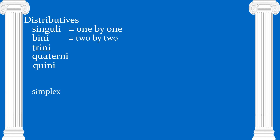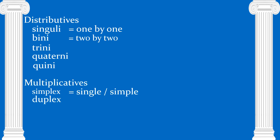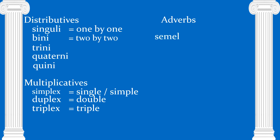Then we have the multiplicatives, like simplex which is single or simple, duplex, triplex which is triple, and we go on and on from there. We also have the adverbs: semel — this one just has to be memorized — it means once.